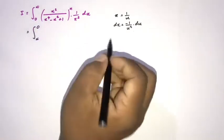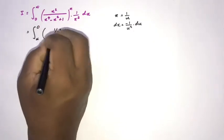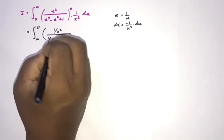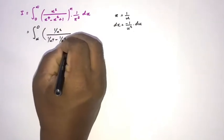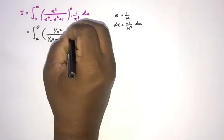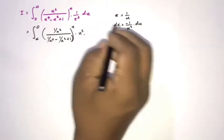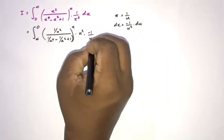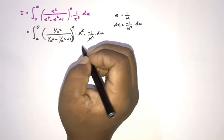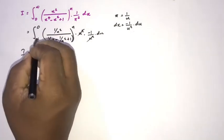Substituting: x squared becomes 1 over u squared, x to the fourth power becomes 1 over u to the fourth power, and 1 over x squared becomes u squared. Multiplying by dx which is minus 1 over u squared du, the u squared terms cancel.